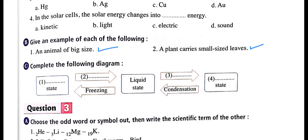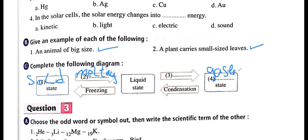Complete the following diagram of states of matter. State one (solid) changes into state two (liquid) by melting. The liquid state changes into the gaseous state by evaporation.